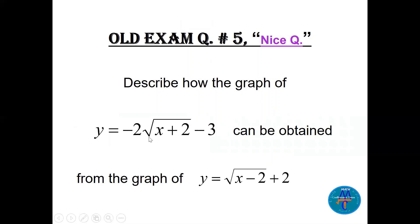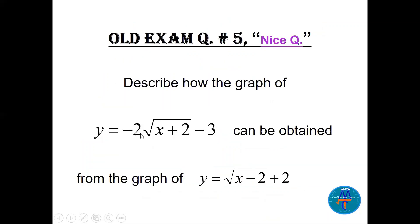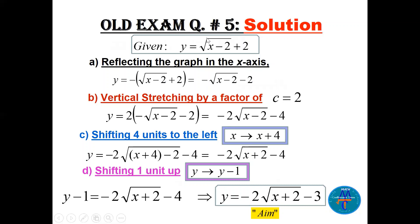Question five: describe how the graph of the target function can be obtained from y = √(x − 2) + 2. We start with y = √(x − 2) + 2 and our aim is −2√(x + 2) − 3. First, reflect the graph in the x-axis by multiplying the whole equation by −1, giving −√(x − 2) − 2.